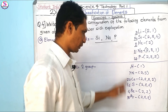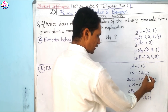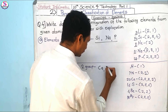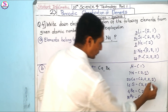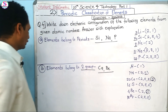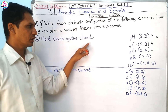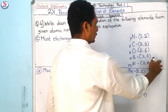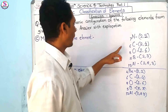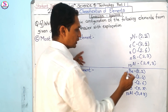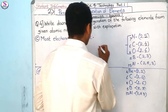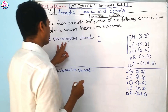For part C — the most electronegative element among the given options — electronegativity relates to non-metallic character. Excluding the metals, we consider the non-metals. Among those, oxygen is the most electronegative element.